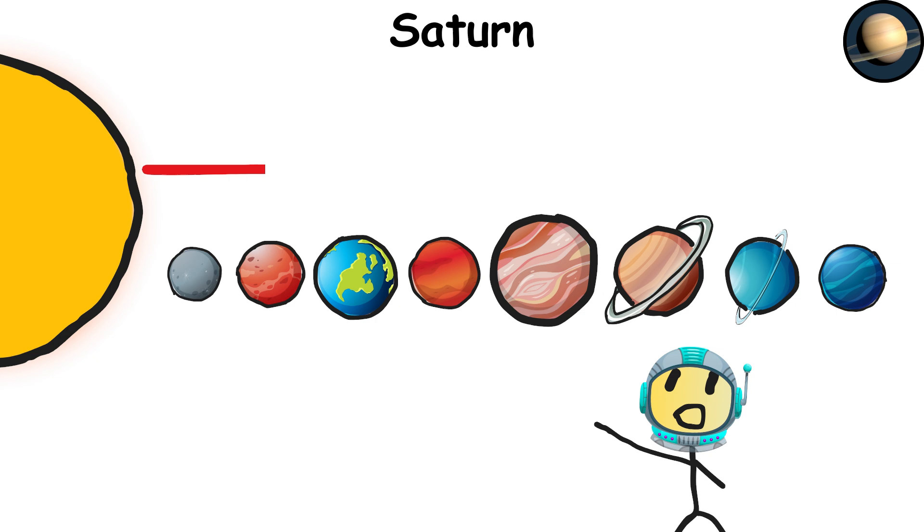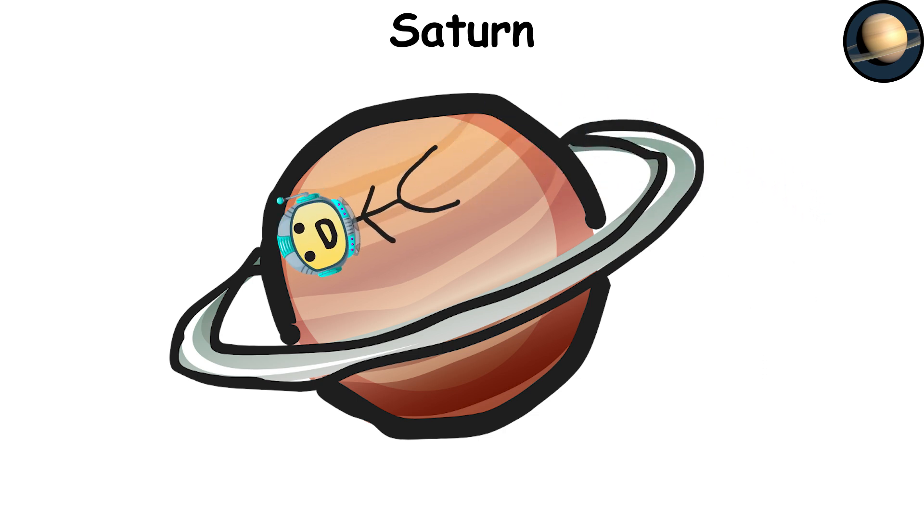Saturn is 886 million miles, 1.4 billion kilometers from the sun, and life here? Not likely, unless you can float around in a gas cloud. But hey, at least you'd have the rings to admire.